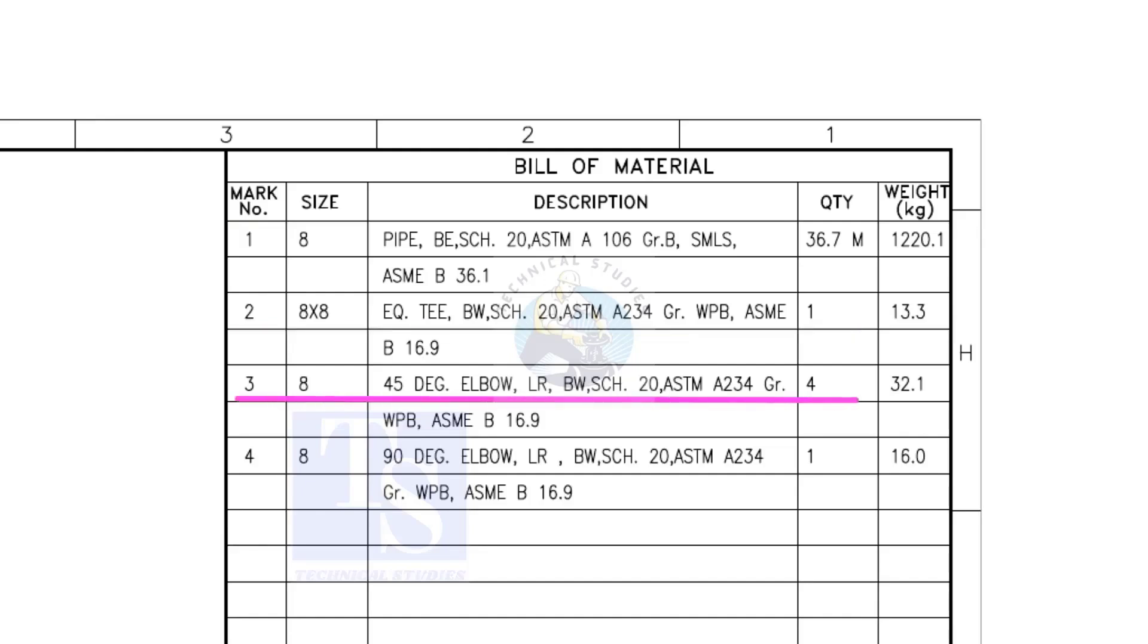Item number 3 is 45 degree long radius elbow. Note that there are 4 numbers 45 degree elbows there. Item number 4 is a 90 degree long radius elbow, and the quantity is 1.